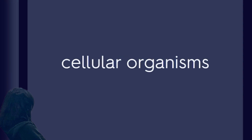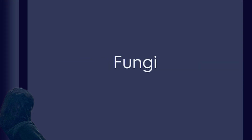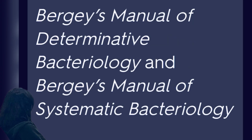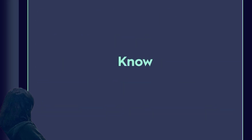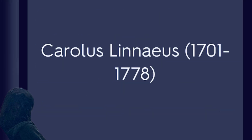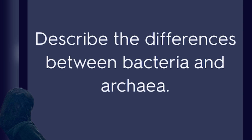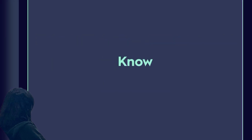Cellular Organisms. Fungi. Who proposed that swamps might harbor tiny disease-causing animals too small to see? Bergey's Manual of Determinative Bacteriology and Bergey's Manual of Systematic Bacteriology. Carolus Linnaeus. Bacteria. Describe the differences between bacteria and Archaea. Hellman's.